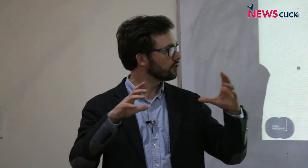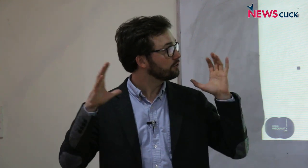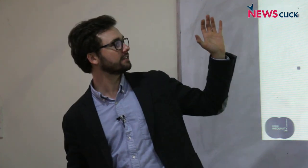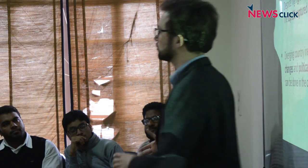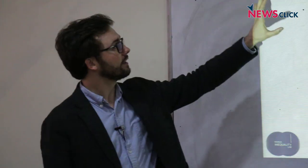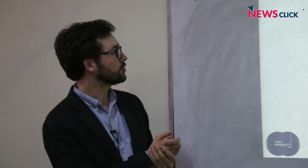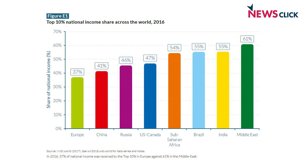That is all new rupees, yuans, euros, dollars — all the new money generated since 1980. The top 1% captured twice as much growth as the bottom 50% combined. Here is a snapshot in 2016, showing the share of national income captured by the top 10% richest in each country. In Europe, the top 10% captured 37% of national income.